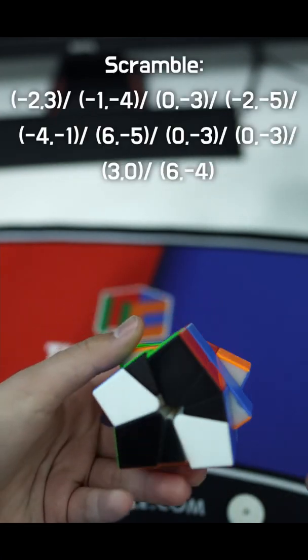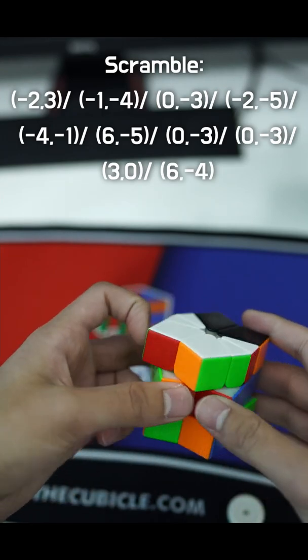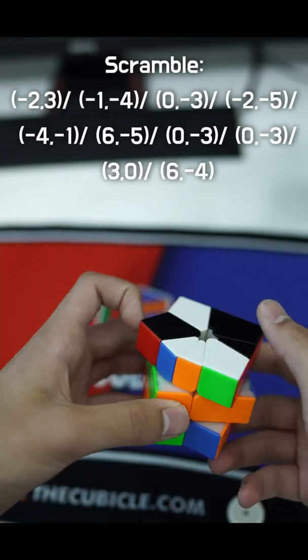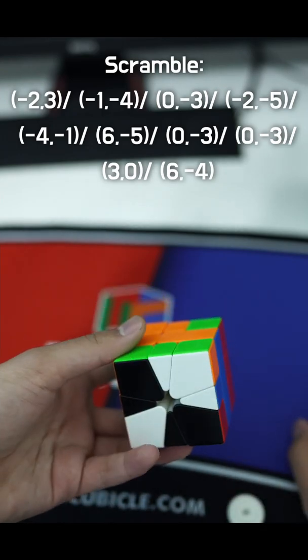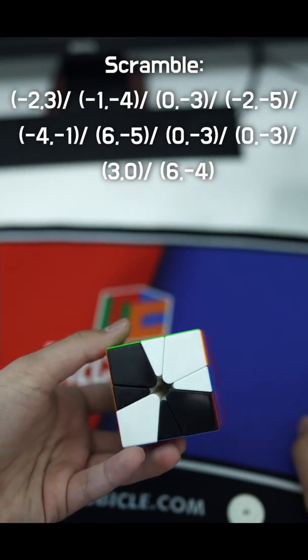Alright, so my cube shape was good - barrel kite - which is really good, just three slices. So I did it like this: U prime, U prime. Then I got this super easy three-slice OBL from